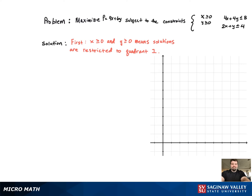Now to find the feasible region, we need to graph the two inequalities, arbitrarily starting with 4x plus 4y less than or equal to 8. First, we need to switch it to an equation and graph the line. To do that, we need two points, the x and y intercept.